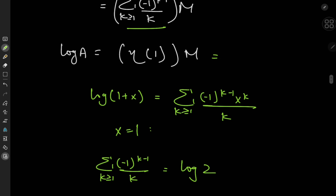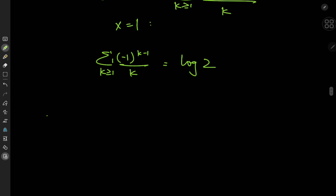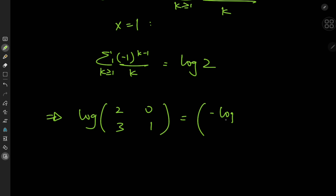So log(A) equals log(2) times the matrix M. We can conclude that the logarithm of the matrix [[2,3],[0,1]] equals [[-log2, -3log2],[0,0]].